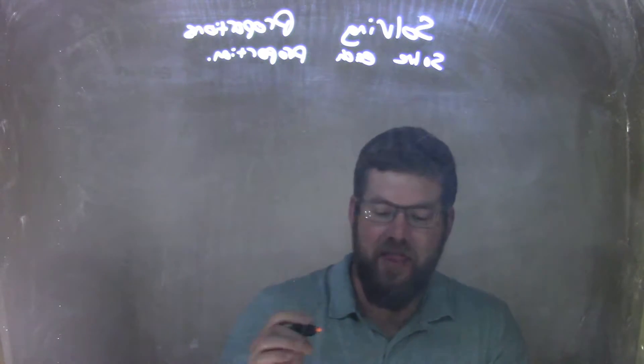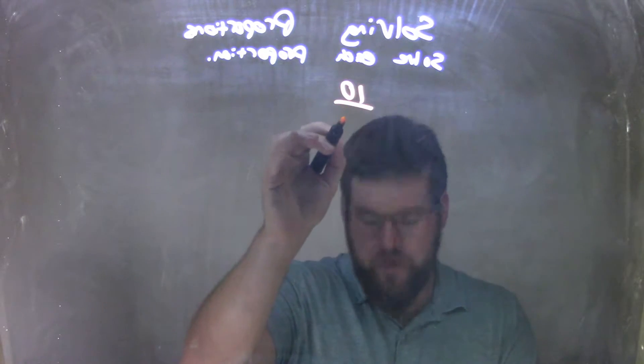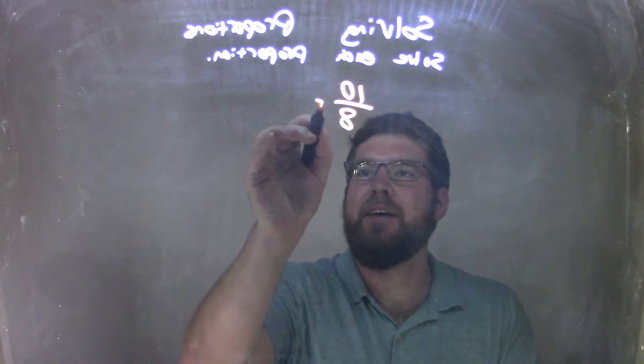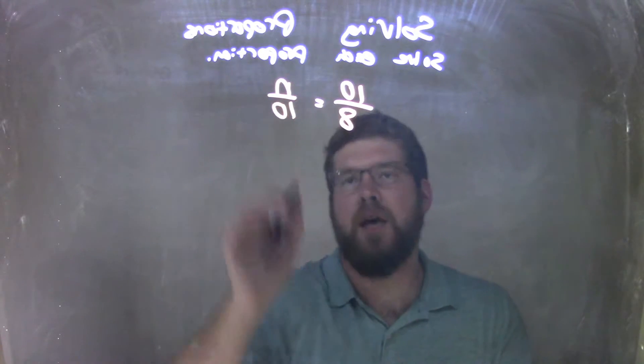So if I was given this proportion here, 10 over 8 equals n over 10.